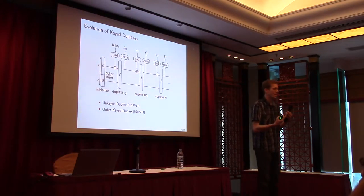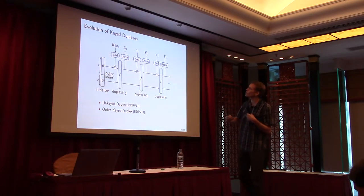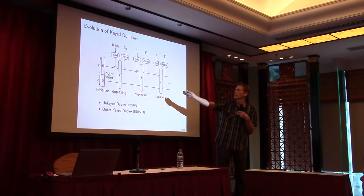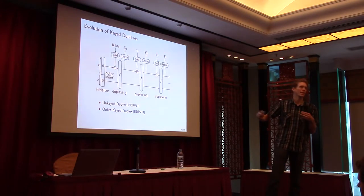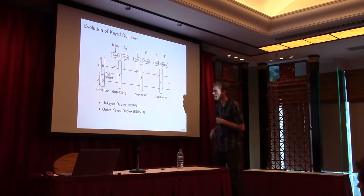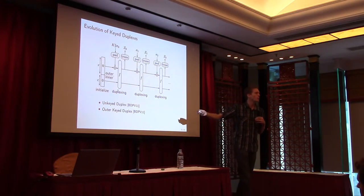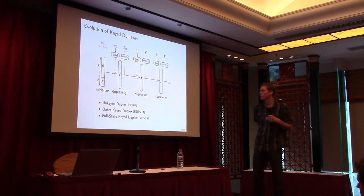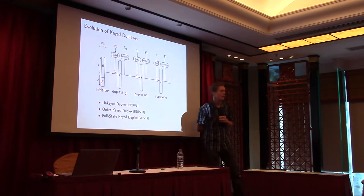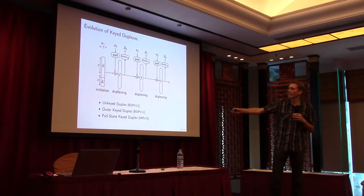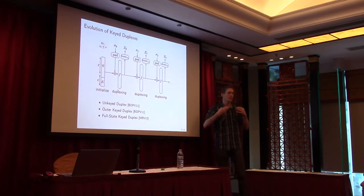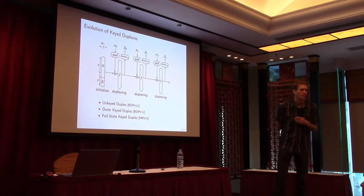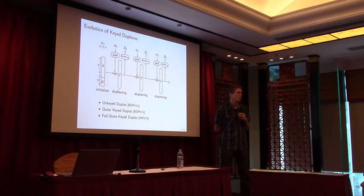You can use this for encryption: input a message and output the ciphertext. You can also just input nothing and take the output as a tag, giving you authenticated encryption. But there is no point in keeping the inner part untouched for absorption. So in 2015 we introduced the full state key duplex, which has full state absorption — the message goes into the entire state. The output is extracted from the outer part, at most R bits at a time, leaving the inner part untouched for extraction. The schemes are equally secure even though this one is more efficient.